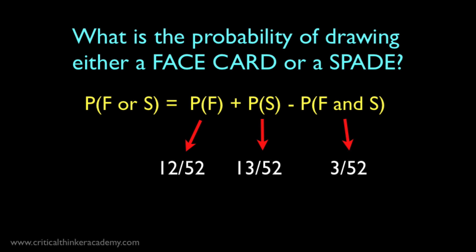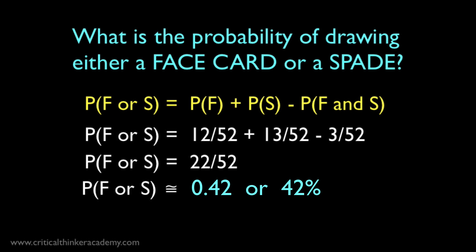And the rest is simple algebra. 12 plus 13 is 25. Subtract 3 is 22. And the answer is 22 out of 52. So this is how you use the general rule for calculating probabilities of disjunctions. You just have to remember to check whether the events are mutually exclusive. And if not, you need to subtract the probability of the conjunction of the two events, the cases where both events occur, or where both of the corresponding propositions are true.